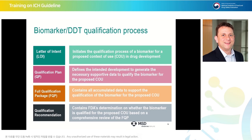Here are the steps for biomarker or DDT qualification. First, a letter of intent is submitted, which initiates the qualification process for a proposed context of use. Next, a qualification plan is generated, defining the intended development to generate necessary supportive data. Then comes the full qualification package, containing all accumulated data to support qualification. Finally, there is a qualification recommendation — FDA's determination on whether the biomarker is qualified for the proposed context of use based on a comprehensive review of the full qualification package.